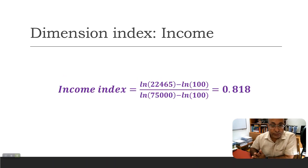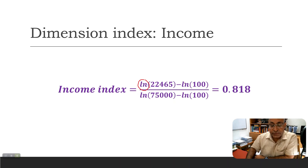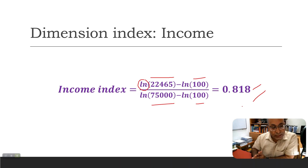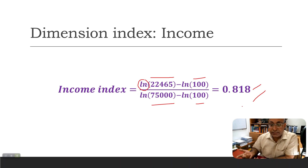For the income index, we use the natural log of the incomes. Using Guyana's income, the minimum, and the maximum — all in natural log — we get an income index of 0.818. We take the natural log to reflect that as income increases, the marginal utility diminishes. It also reduces the huge variability in income values.